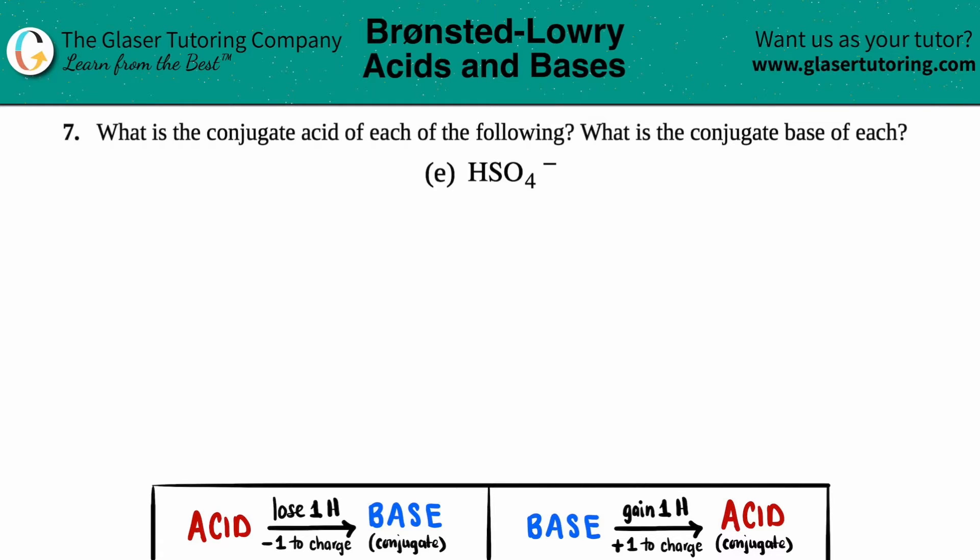Number seven, what is the conjugate acid of each of the following and then what's the conjugate base of each? And then we have letter E out of the bunch. So in this case we just have to find the conjugate acid and the conjugate base of HSO4 minus.